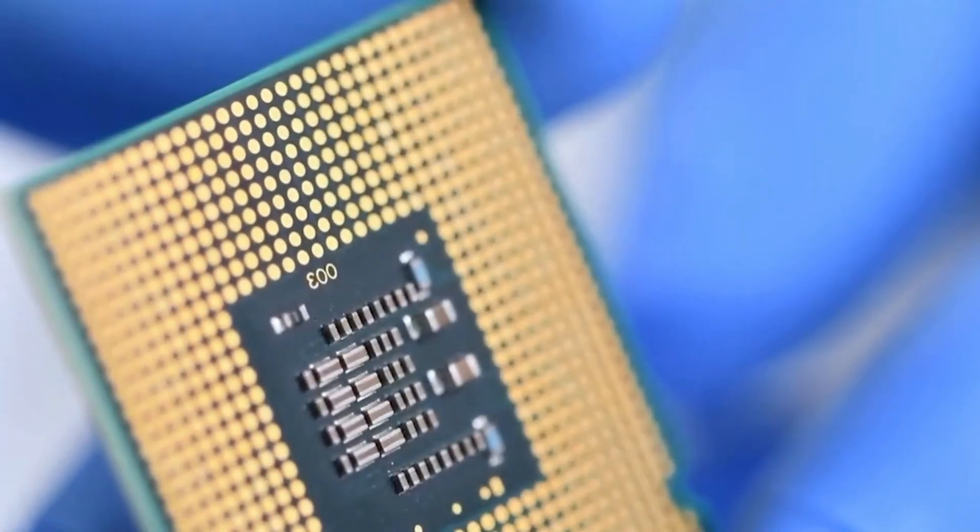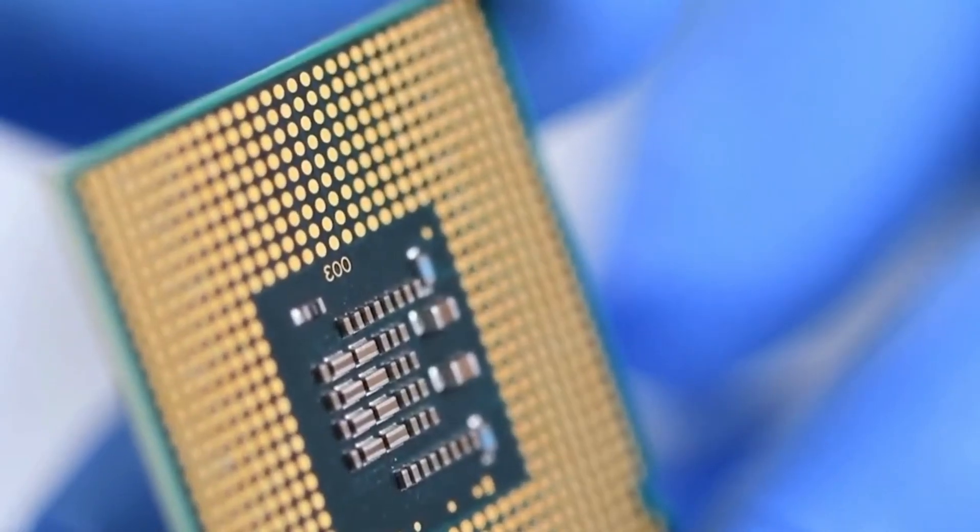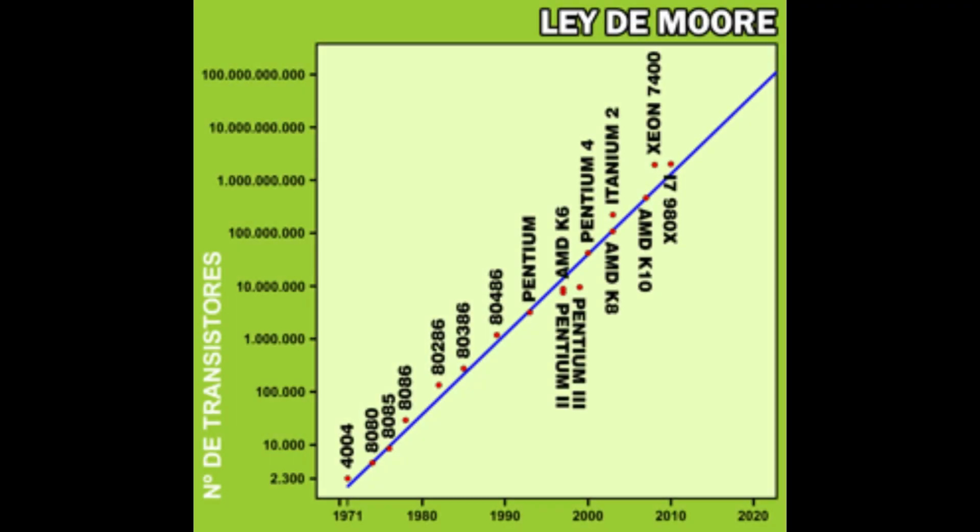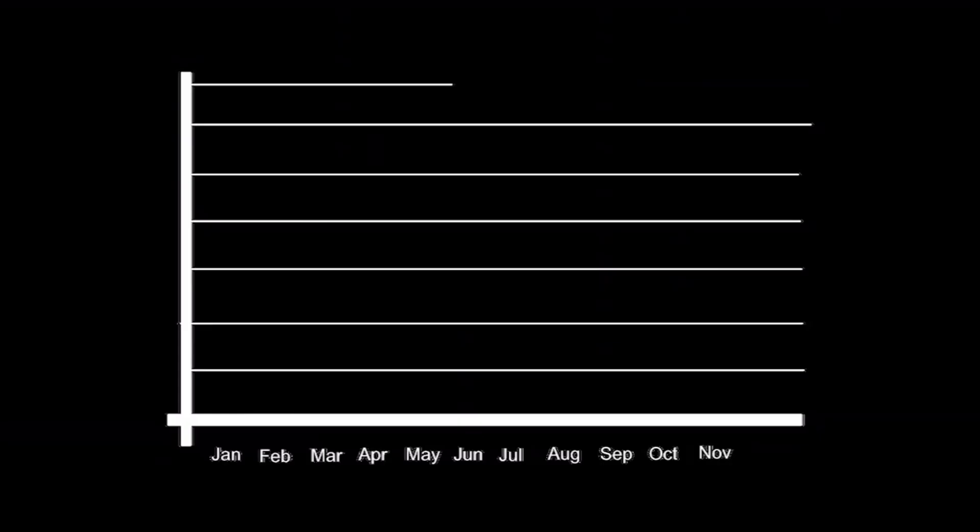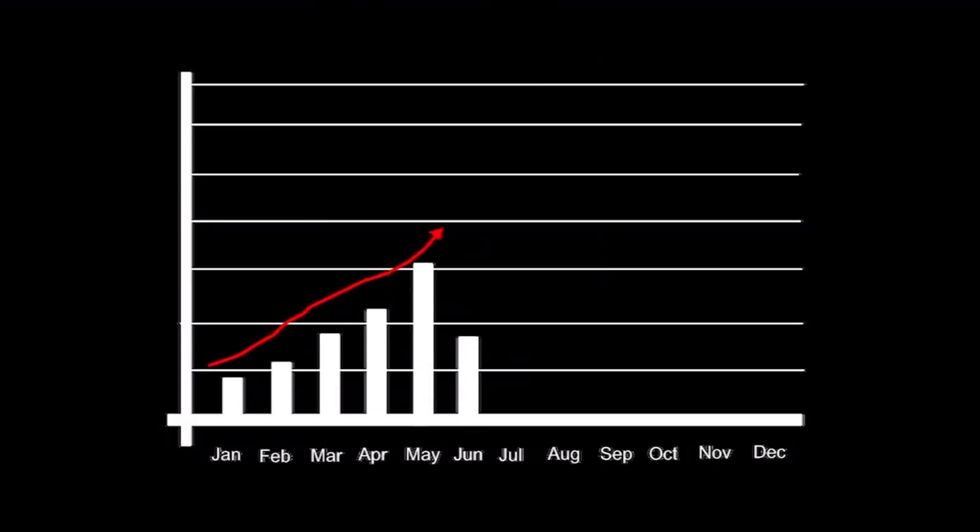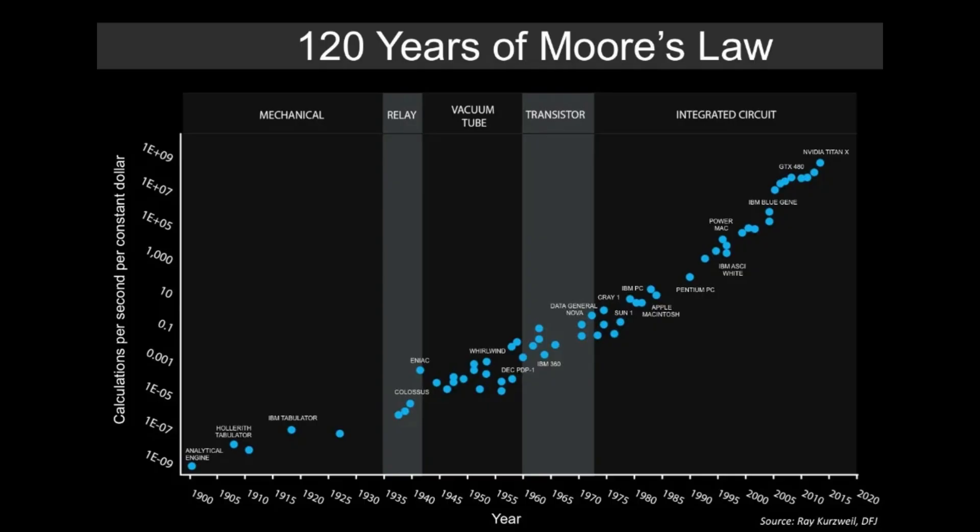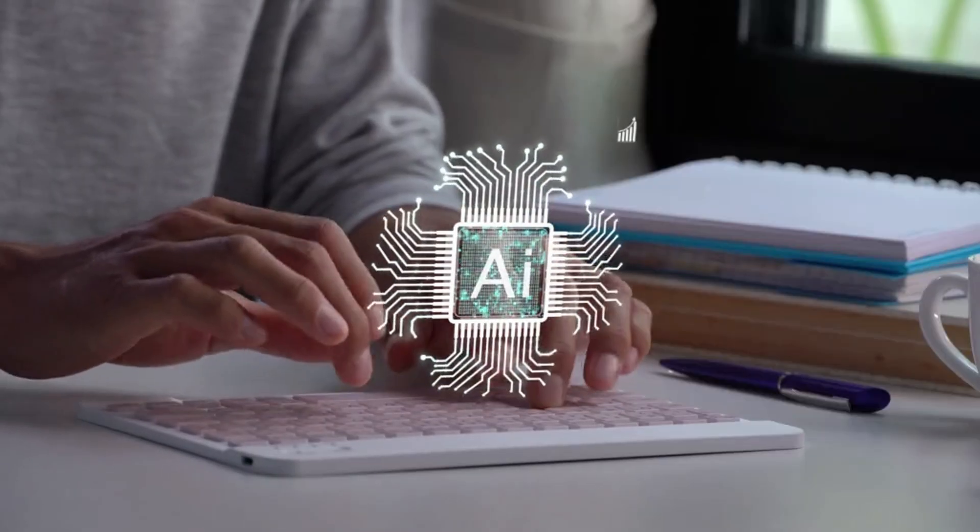Since then, the evolution has been rapid. A trend known as Moore's Law predicts that the number of transistors on a chip will double approximately every two years. To this day, that prediction has held true, allowing electronic devices to become more powerful, smaller, and more energy efficient.